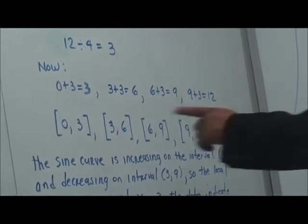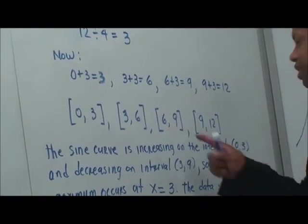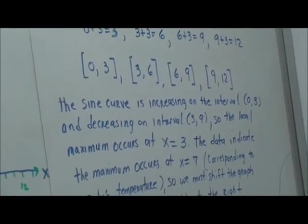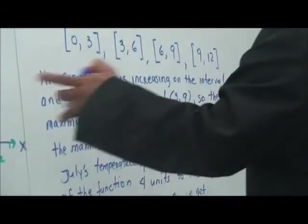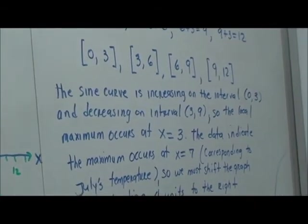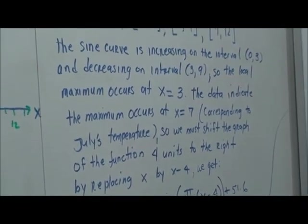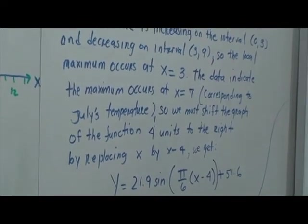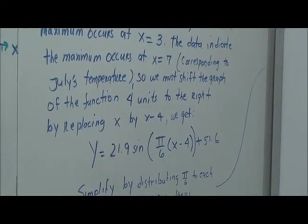So, we have zero, and we have three, and we have three and six. We have six and nine, and we have nine and 12. So, the sine curve is increasing on the interval. If you notice the graph, the sine curve is increasing on the interval of zero to three and decreasing from what? Three to nine. So, the local maximum occurs at what? X is equal to what? Three, as you see on the graph right here. That is going to be the local maximum.